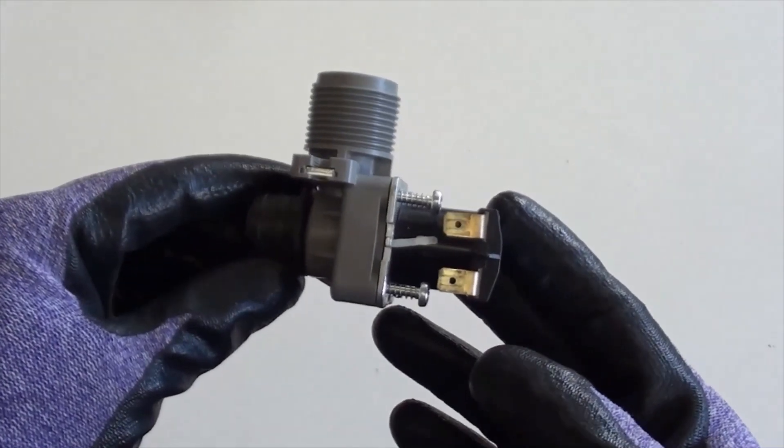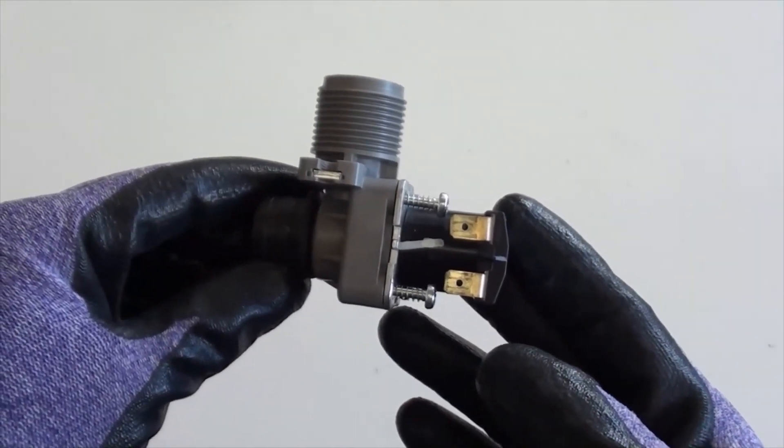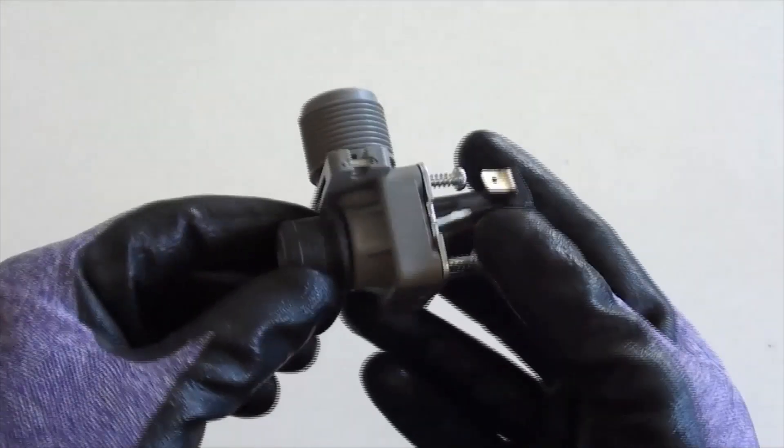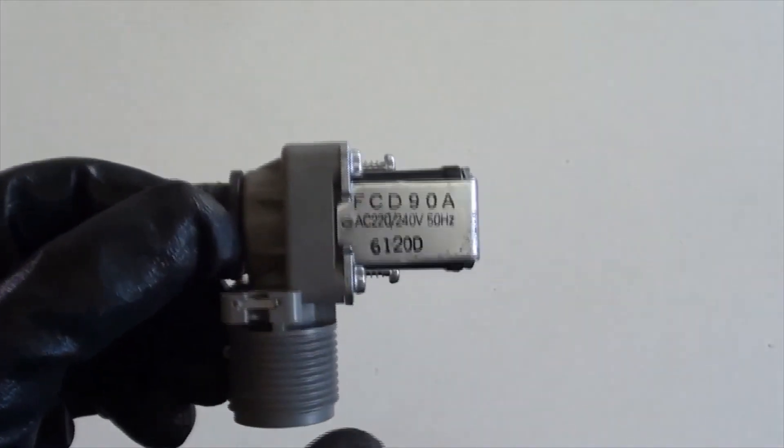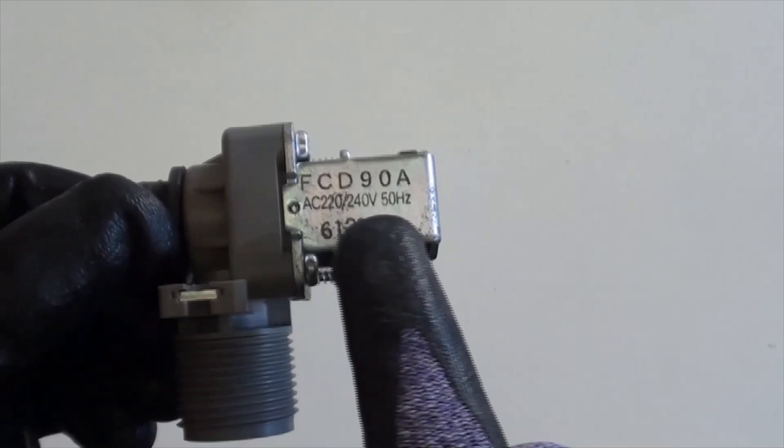This is a water valve from a recycled washing machine. You can see I've already loosened two screws here. Its power source is 220-240V and 50Hz.